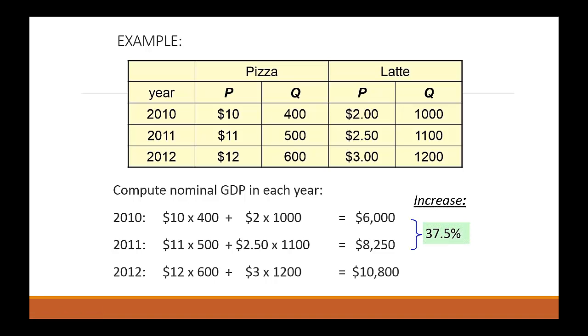For 2012, the value of nominal GDP is equal to $10,800. For each year, we use the output of each good times its market price to get the total nominal GDP. Using the GDP growth rate, we can see that in 2011 the economy grew 37.5%, and in 2012 it grew almost 31%.